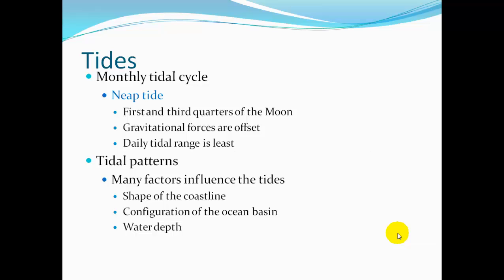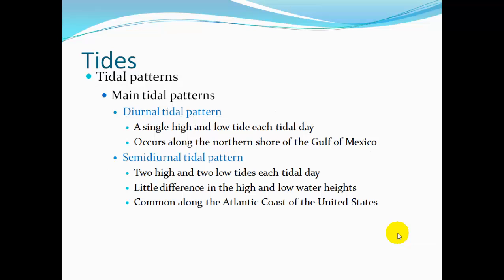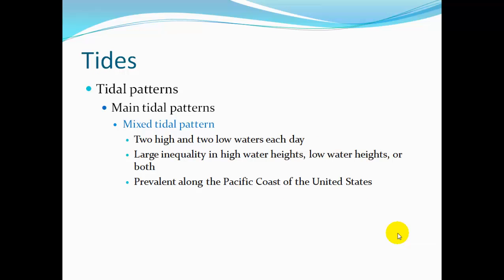Tidal patterns are influenced by many factors: the shape of coastlines, configuration of the ocean basin, and water depth. The main patterns are: diurnal — a single high tide and low tide each tidal day, occurring along the northern shore of the Gulf of Mexico; semi-diurnal — two high tides and two low tides each tidal day with little difference in heights, common along the Atlantic coast of the United States; and mixed — two high and two low waters each day with large inequality in high and low water heights, prevalent along the Pacific coast of the United States.